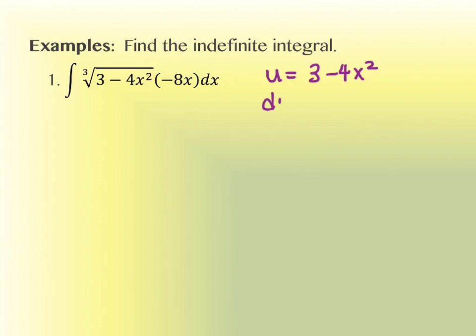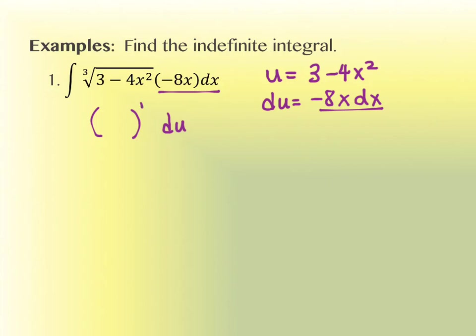Then we take the derivative of u. The derivative of 3 minus 4x squared is negative 8x dx, and all of that is right here in the integrand. So as we do our substitution, the negative 8x dx piece gets replaced by du. The first part is the cube root of u, which is more helpful to write as u to the 1/3. So this becomes the integral of u to the 1/3 du.